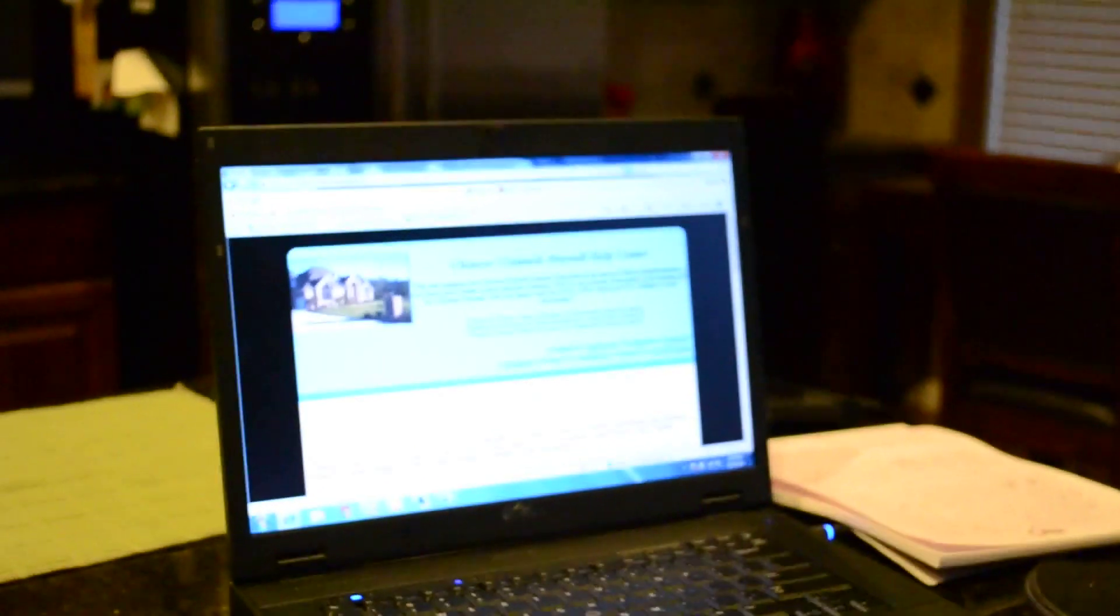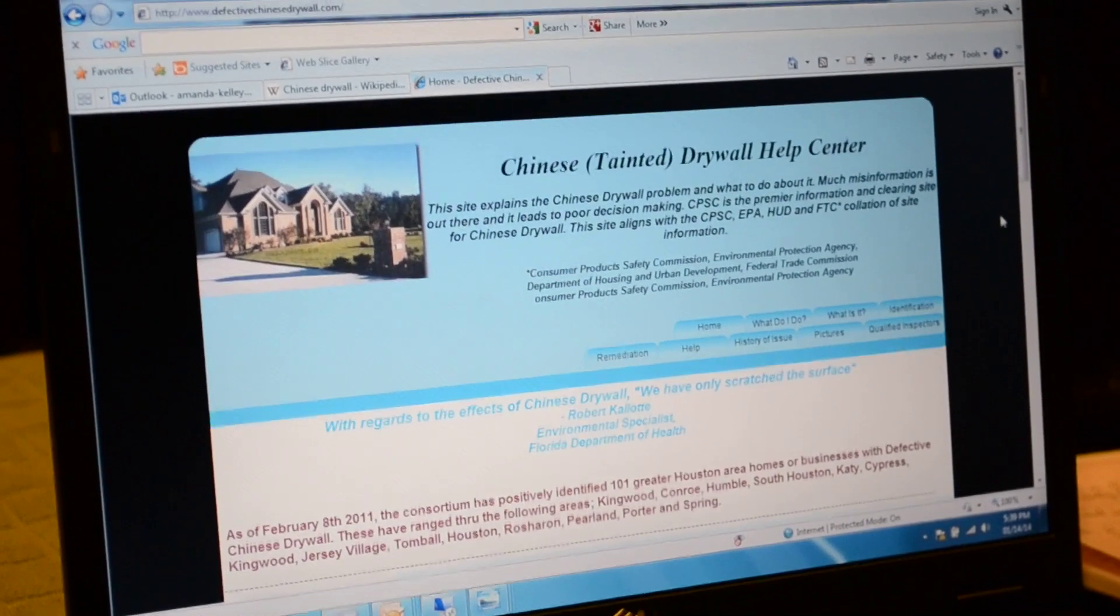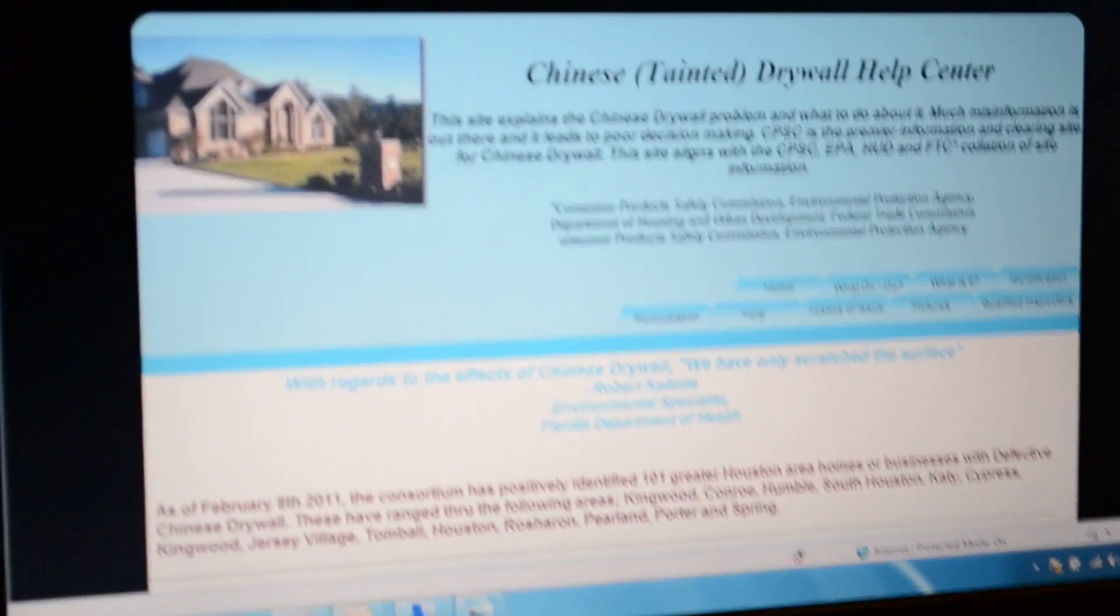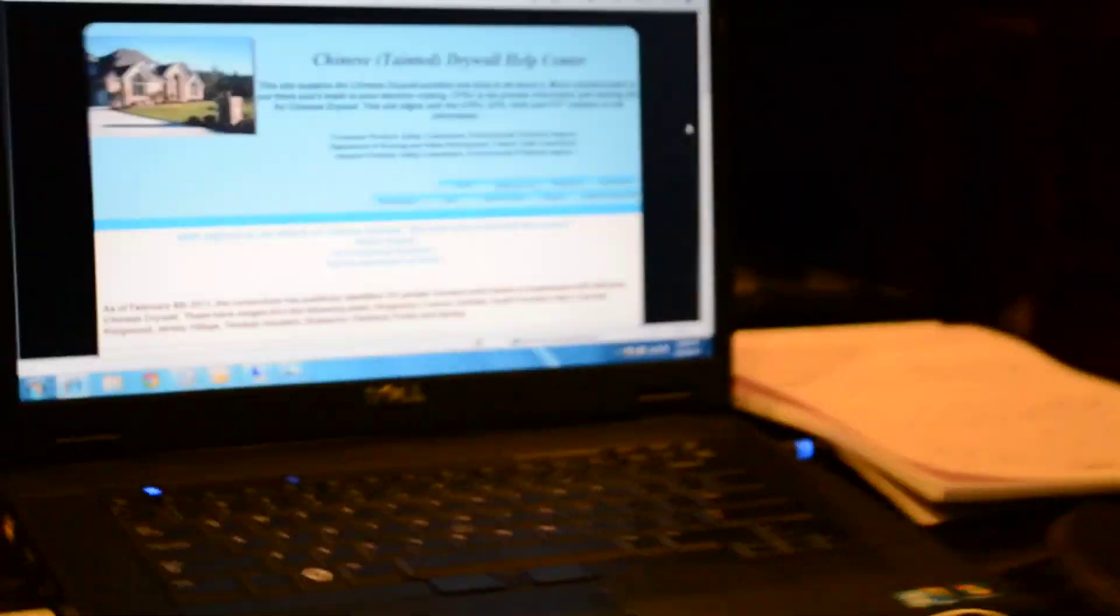Another good website is defective Chinese drywall dot com. It gives you a lot of information about what you can do. This is where I found the inspector to come in and look at my house to tell me if he thought it was showing signs of Chinese drywall. His name is Bob Lovelace, a very nice man.